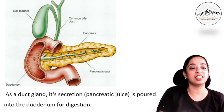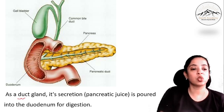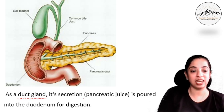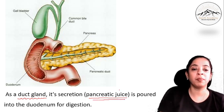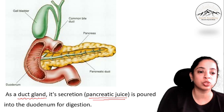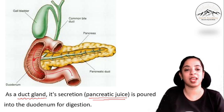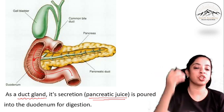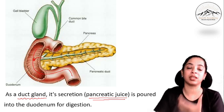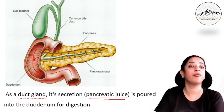As a duct gland, the pancreas secretes pancreatic juice. Remember the spelling — pancreatic juice. Through this duct, the pancreatic juice is poured into the duodenum, then goes into the small intestine. So as a duct gland, its secretion — that is the pancreatic juice — is poured into the duodenum for digestion.